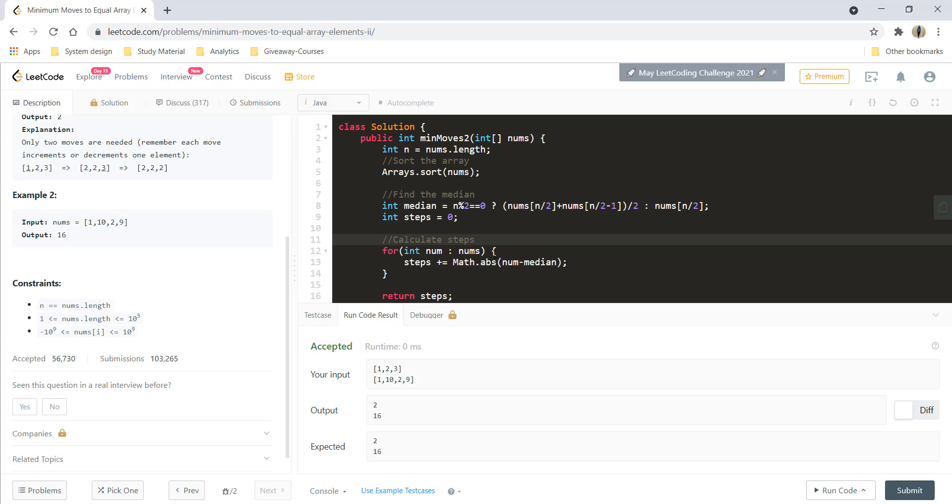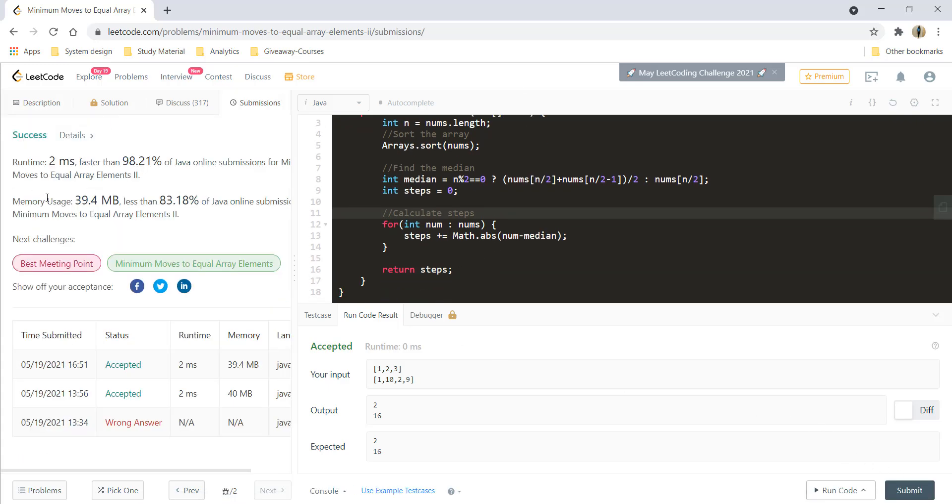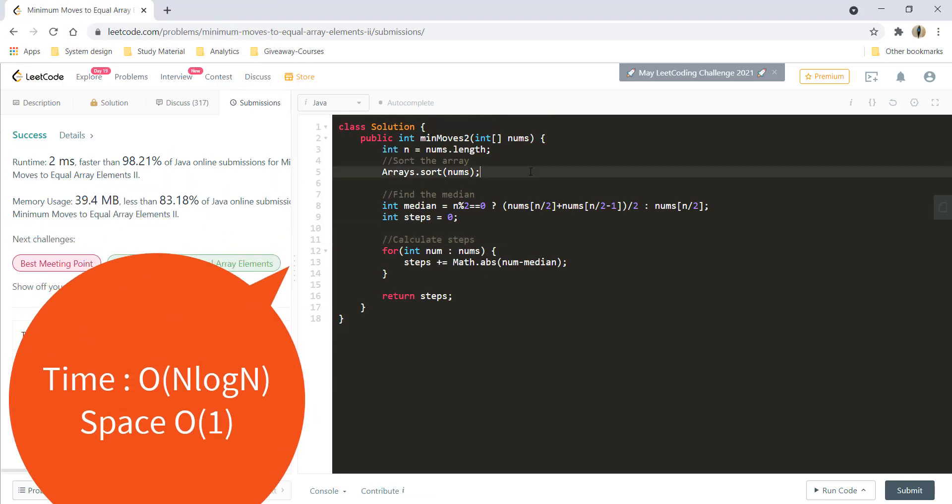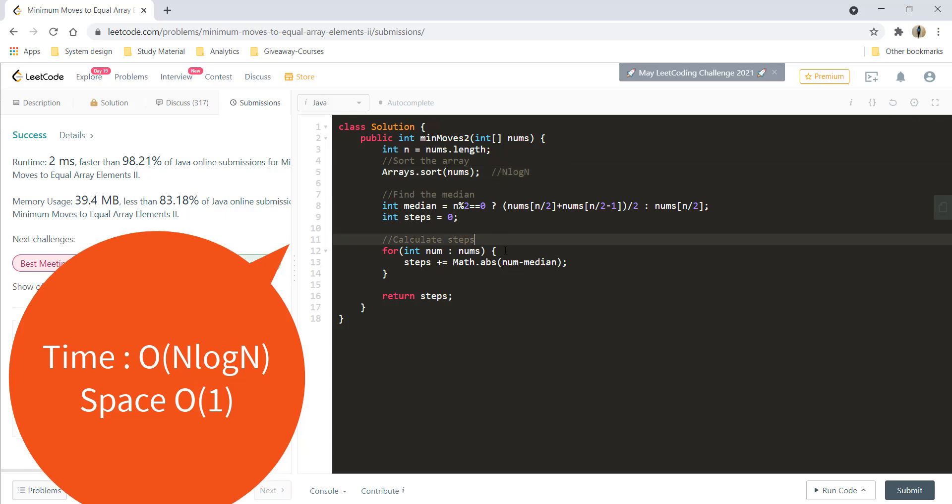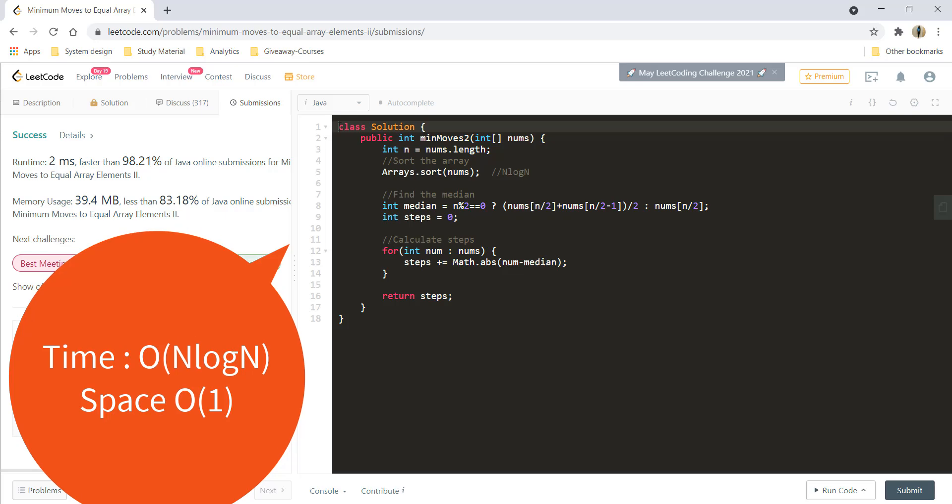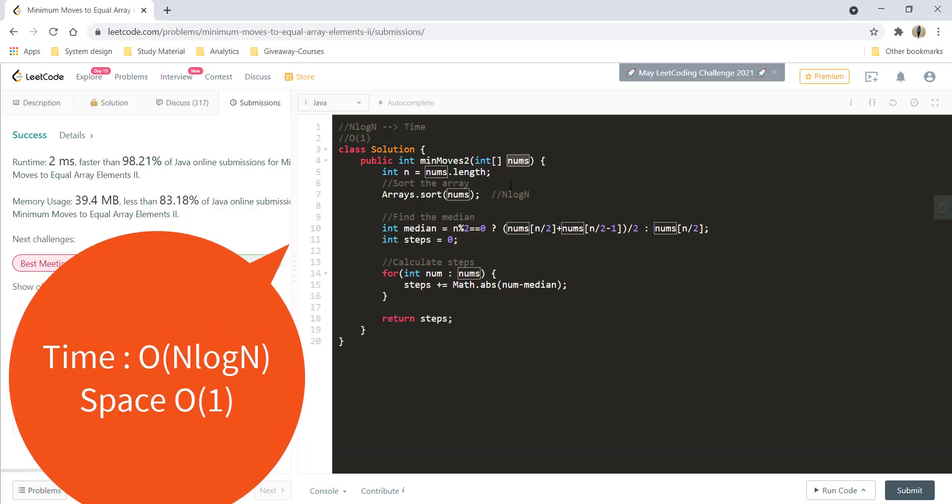So this is the median approach. Let's run this code and it's giving a perfect result. Let's submit this and it got submitted. The time complexity for this is n log n for sort method and for this is n so the overall time complexity becomes n log n and the space complexity is o of 1 because we are not using any extra space.